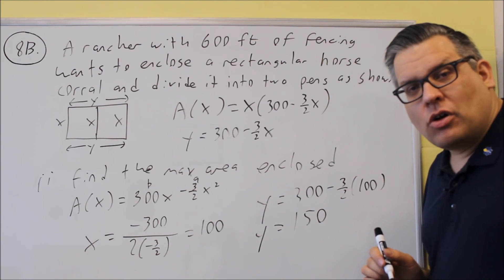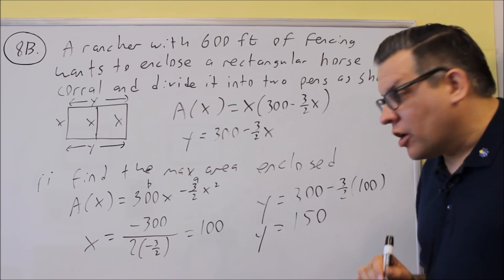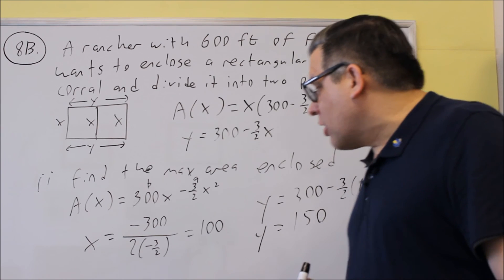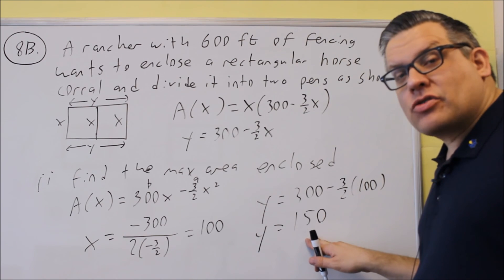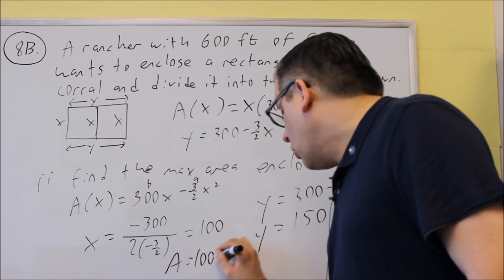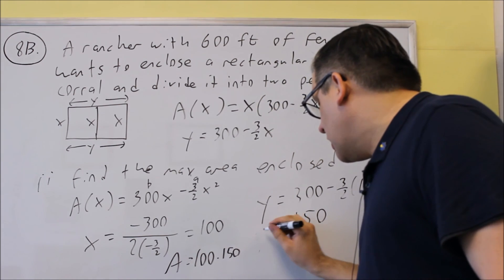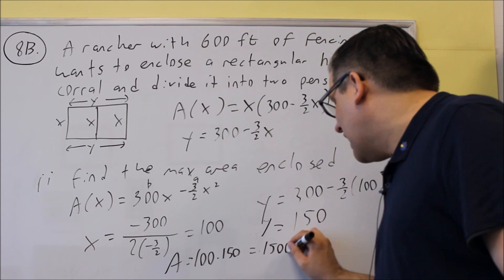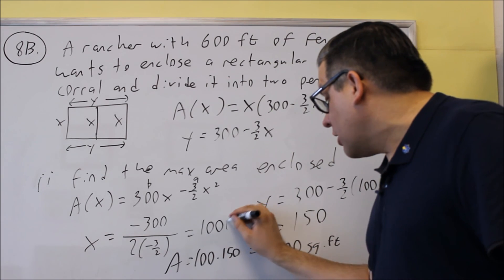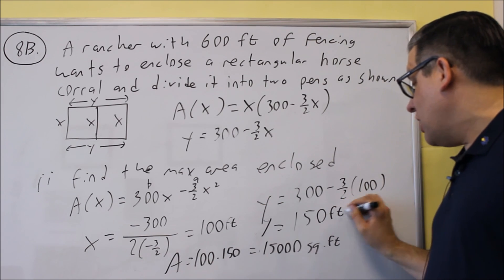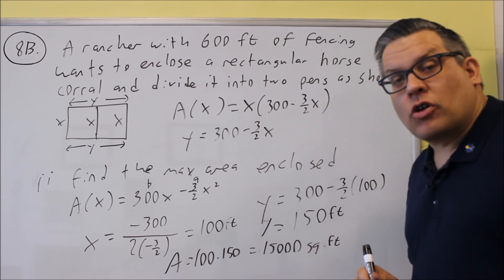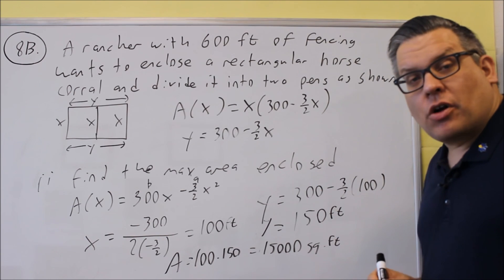So now, if the question asks for what dimensions produce the largest area, you would answer 100 by 150. To find the actual maximum area enclosed, though, I'm going to multiply these two together to get the area. So in this case, my area is equal to 100 times 150. So that would give me 15,000. And I would put square feet. Each of these individually would be in terms of feet here. If I multiply two feet together, I get square feet as a result. So 15,000 square feet would be the maximum area enclosed.